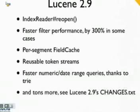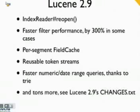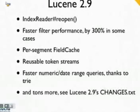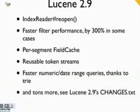Per-segment field cache — this is the cache of basically an uninverted index of the fields. Prior to Lucene 2.9, the field cache was across the entire index, so any time the index was reopened, the entire field cache had to be rebuilt. With Lucene 2.9, the field caches are per-segment, so reopening only occurs on a per-segment basis. There are many speed improvements that can be factored in, and this allows quicker visibility into updates as well.